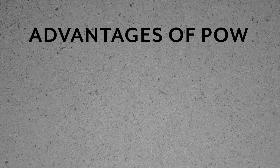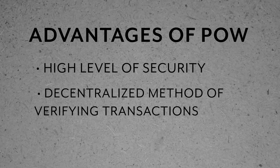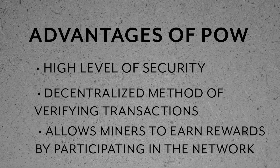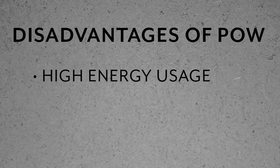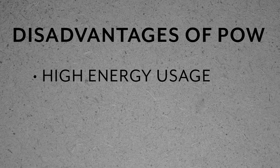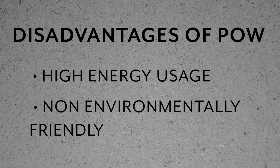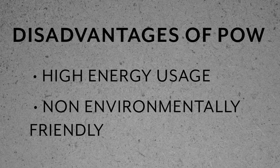The advantages of a proof of work algorithm include a high level of security, a decentralized method of verifying transactions, and it allows miners to earn rewards by participating in the system. However, there are downsides. Although proof of work is secure, it requires a significant amount of energy to verify transactions. Since the computers or miners on the network must spend a lot of energy to operate, it is not as environmentally friendly as most systems.